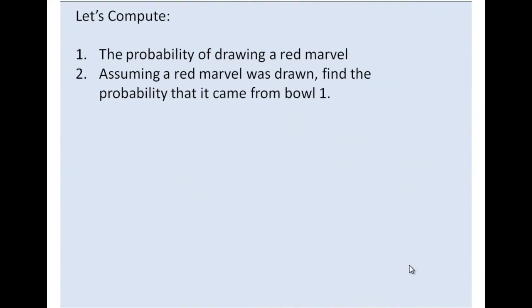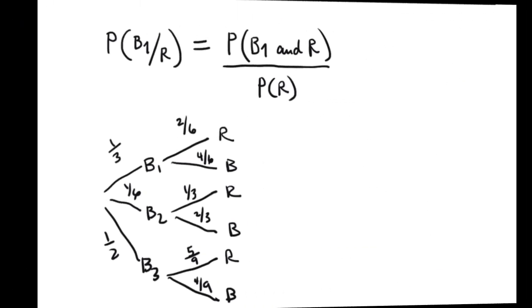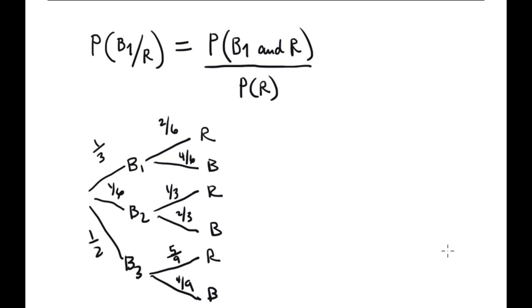The second question is: assuming a red marble was drawn, find the probability that it came from ball number 1. This is a conditional probability problem. Given red, we need to find the probability that it comes from B1. The formula is: probability of B1 and red, divided by probability of red.